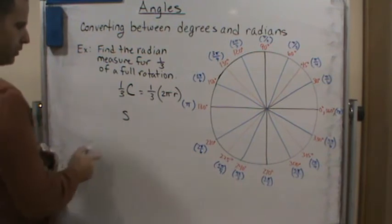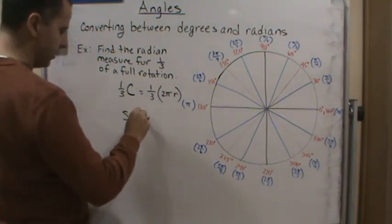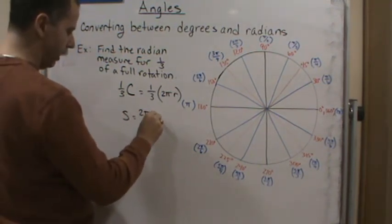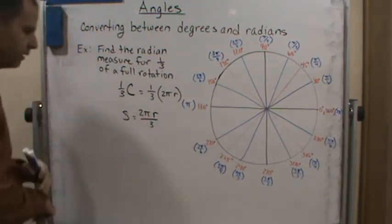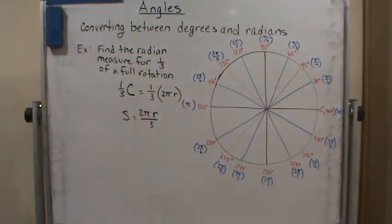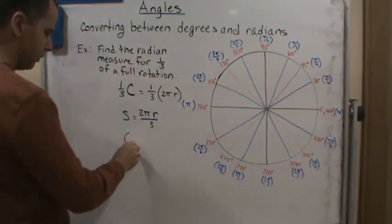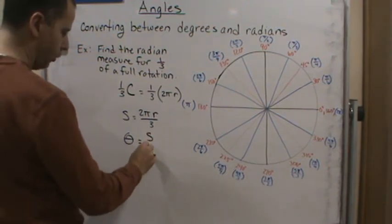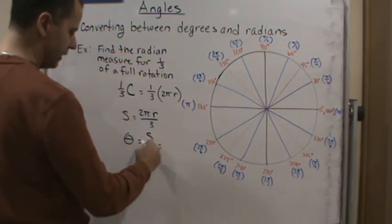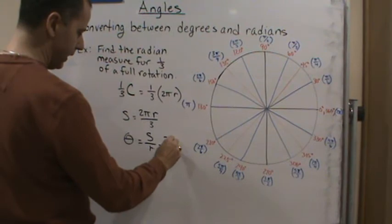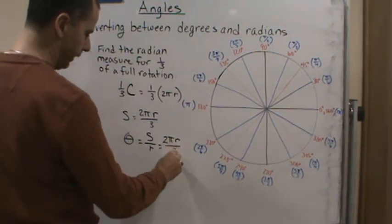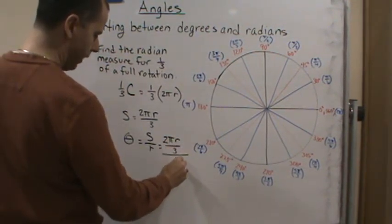Right? So far so good, right? Now how do I get the angle measure? Well, remember the angle measure is equal to s over r, which then in this case equals 2πr over 3 divided by r.